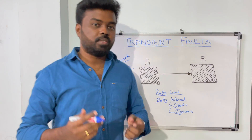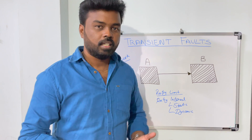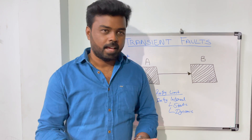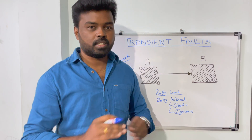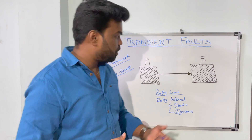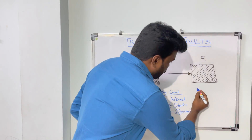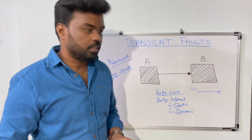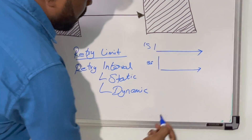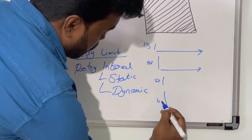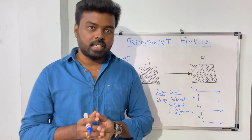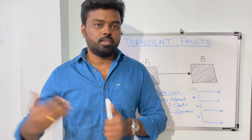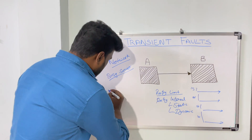With a static retry interval, you might say the interval is three seconds — whenever service B gives a failure response, service A retries after every three seconds up to the retry limit. With a dynamic retry interval, you start by waiting one second before the first retry, then if it fails again you wait three seconds, then five seconds, then maybe ten seconds. You exponentially increase the retry interval between successive retries, giving the service enough breathing space. This process is also called exponential backoff.